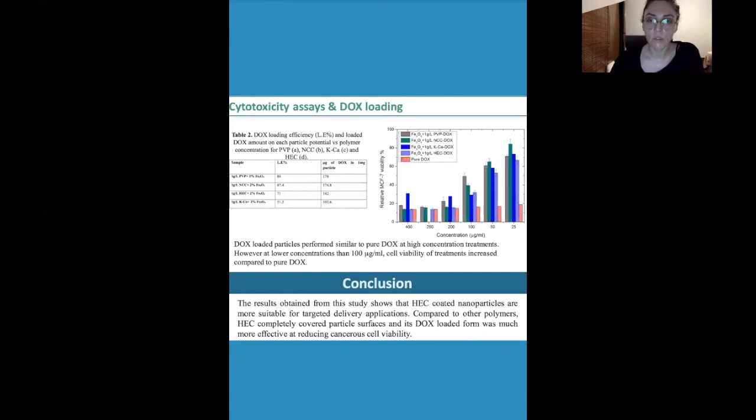Later we performed toxicity assays for each particle and compared it to pure doxorubicin. The effect of each treatment can be seen here. We can see that at higher concentrations, except kappa-carrageenan, particles have similar higher toxicity to cancer cells as pure doxorubicin. But as the concentration decreases, the gap between pure doxorubicin and the coated particles increases, which indicates that if these particles are used, higher concentrations are more suitable for drug delivery applications.